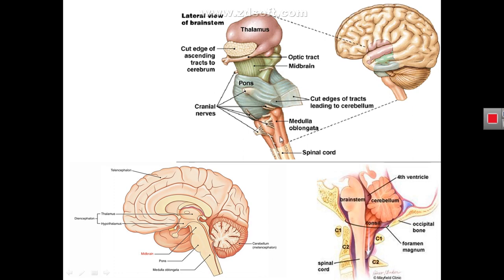These three parts of the brain stem are in continuity below with the spinal cord. This figure shows that the medulla oblongata continues below with the spinal cord. The transitional zone between the medulla oblongata and the spinal cord is demarcated by the upper border of the atlas vertebrae, which is the first cervical vertebrae. In a gross examination, you will not be able to see a feature that demarcates the transitional zone, and you have to depend on the upper border of the first cervical vertebrae for this limit between the medulla and the spinal cord.